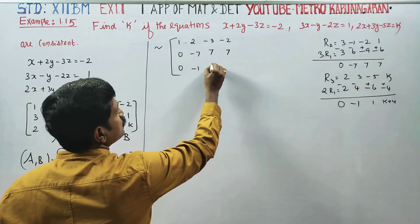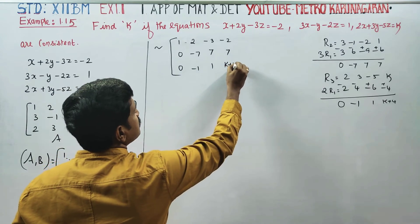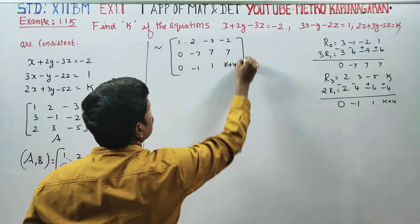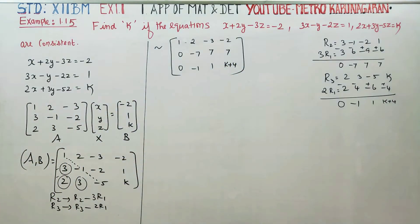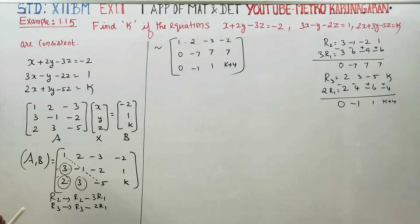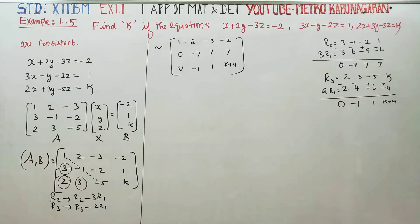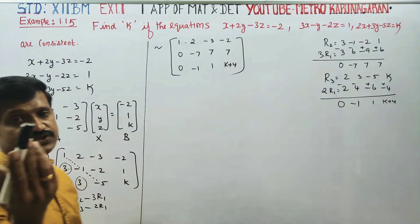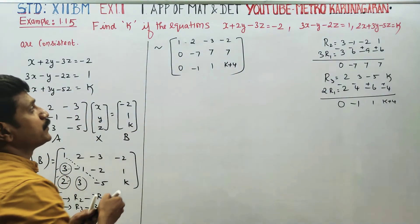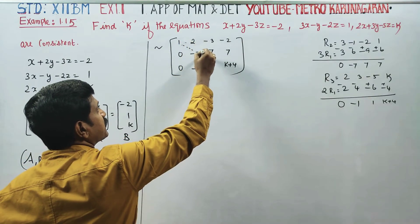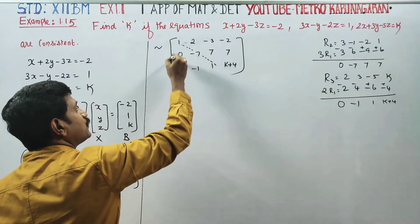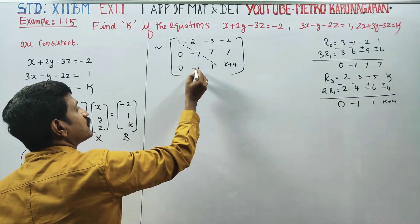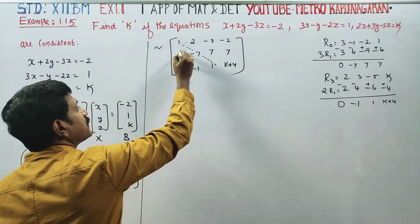After further row reduction, we get 0, minus 1, 1, k plus 4. The main diagonal element in position 3 needs to be examined. We need the third diagonal entry to satisfy rank conditions.